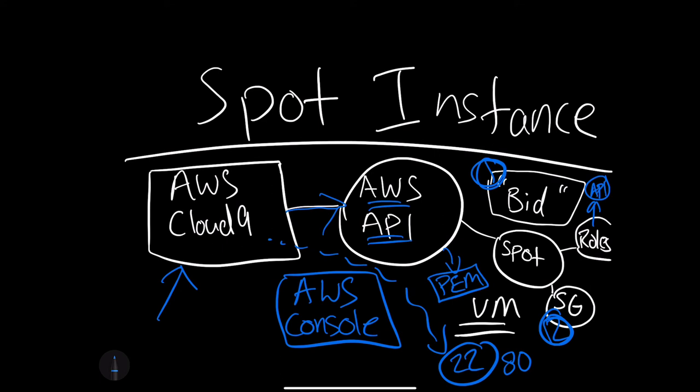So really, there are only a few moving pieces to care about. It's the bid, the security group, the roles, and the SSH key PEM file. This is why I would recommend Cloud9 — you can make that SSH connection directly from the Cloud9 environment.